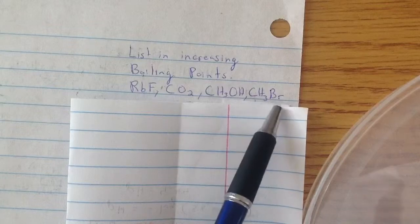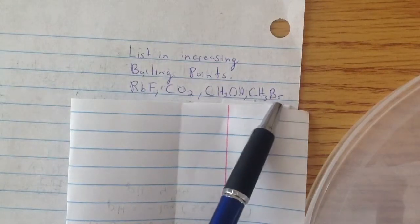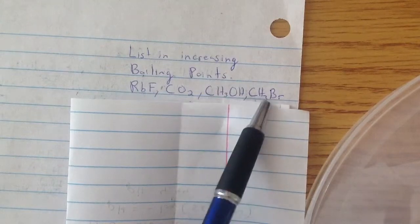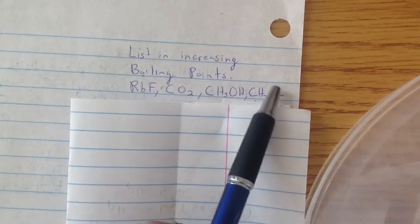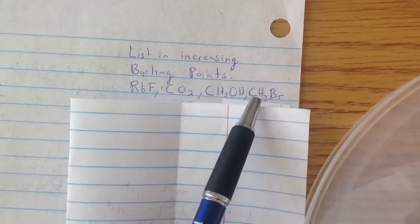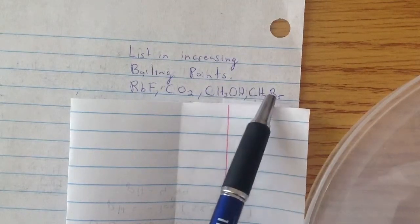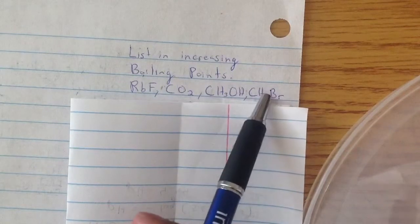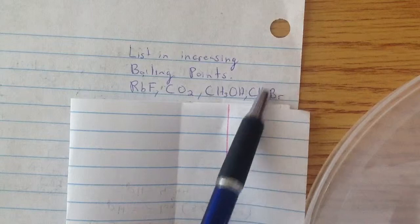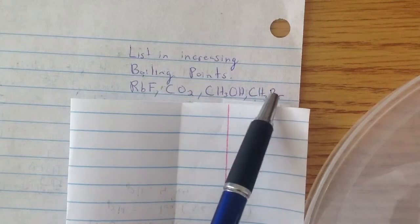And then CH3BR. BR is electronegative. So it's going to be pulling in on these electrons. And if it pulls in, it's going to make this overall molecule polar. If it's polar, that means that it has to be dipole-dipole. And it's dipole-dipole and dispersion because most molecules have dispersion forces. So this is going to be dispersion and dipole-dipole.